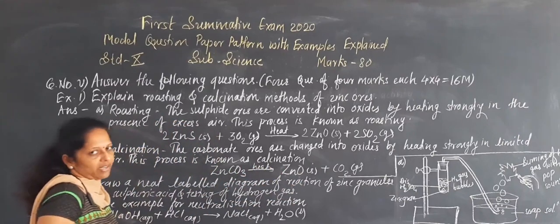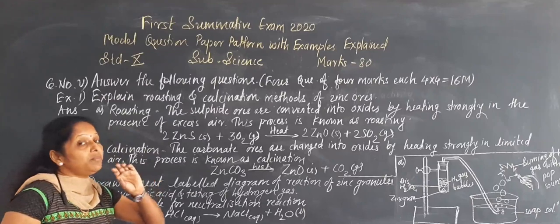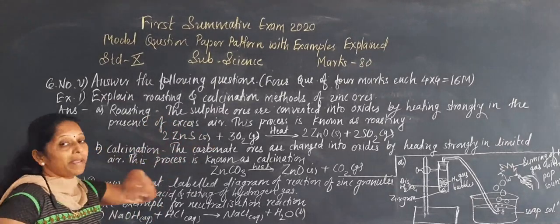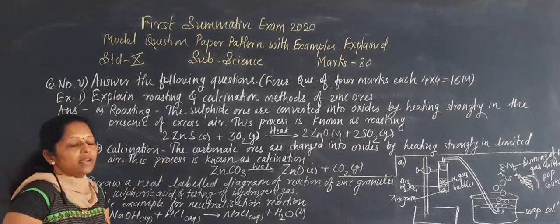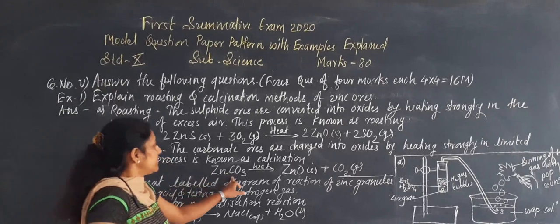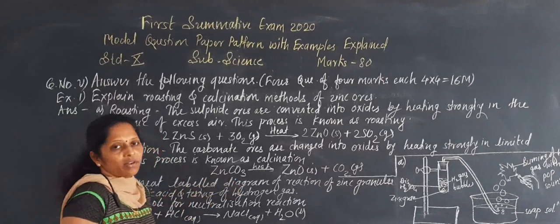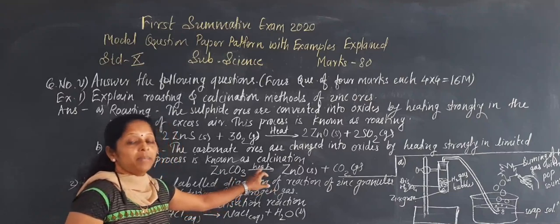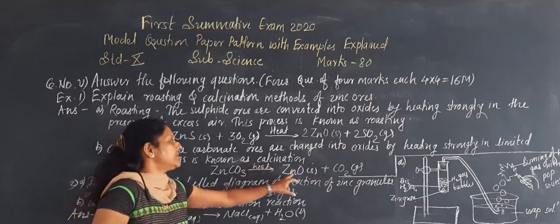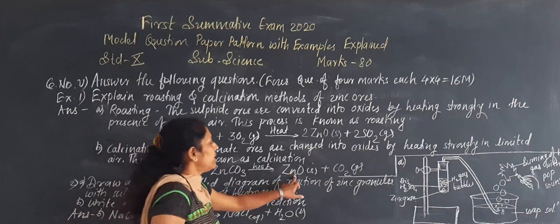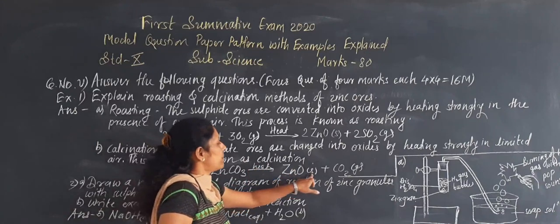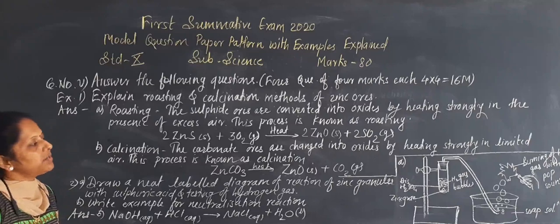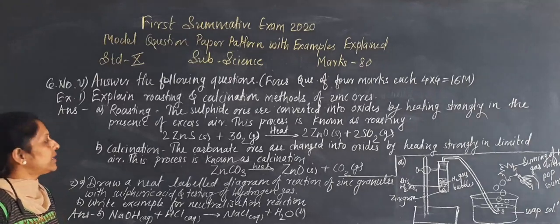The carbonate is heated strongly but in the presence of limited air. In the roasting method there is heating strongly in the presence of excess air, but here in calcination we are using limited air. ZnCO3 is heated in the presence of limited air to give zinc oxide (ZnO) and carbon dioxide (CO2). This is the calcination method. Both the roasting and calcination equations should be included in your answer.